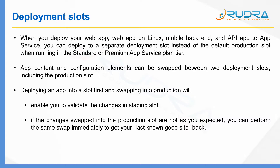Deployment slots let you create development, testing, staging, and production slots. You can deploy different versions of your application into these slots, test them before publishing to production. There is also something called swapping — once you publish into a staging slot, you can swap it with production. For example, publish to staging, test with a few users, and once satisfied, swap it with production so the staging content moves into production.